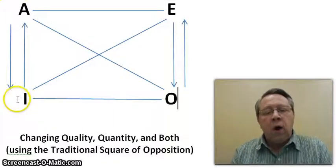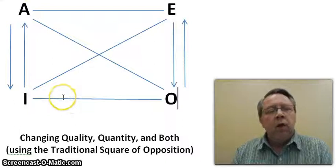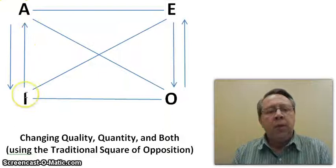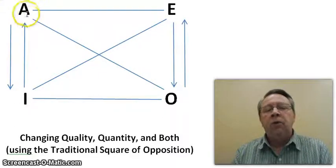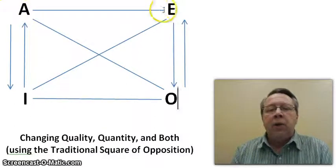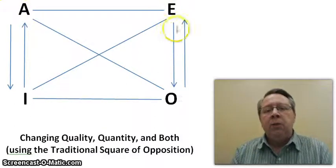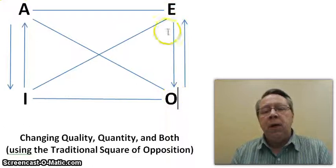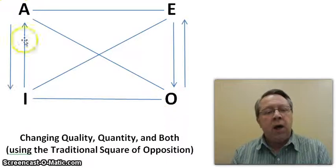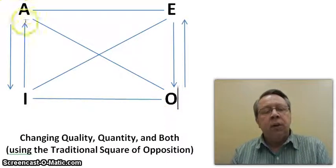To change the quantity, we're going to go up or down. To go from 'all A are B,' changing the quantity goes to 'some A are B,' or from 'some A are B' goes to 'all A are B.' Likewise, if I go from 'no A are B,' I'm going to 'some A are not B.' Notice that these stay within the same — either the affirmative or the negative — with E and O being the negative, and I and A being the affirmative.